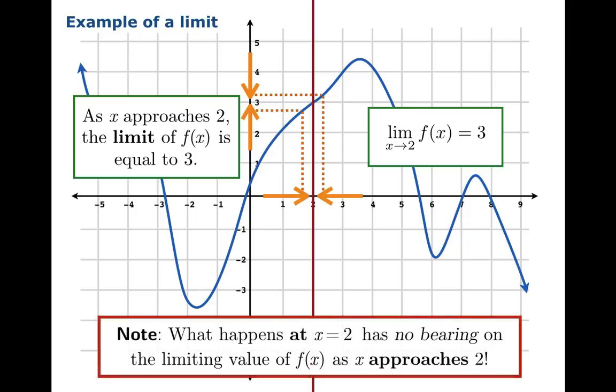Now, an important comment here is what happens at x equals 2 has no bearing on the limiting value of f of x as x approaches 2. This is by definition. The limit has everything to do with what happens near the target argument, in this case 2, and not what happens at 2. So we've left a zero-width curtain there at 2 to indicate that it really doesn't matter what happens.